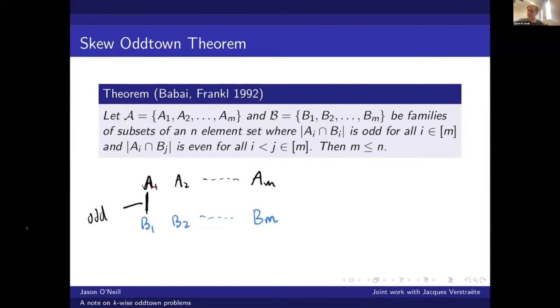But if I take one like this or this, it's even. And to see that this is really a generalization of classical oddtown, if I let my family A equal B, so what I mean by this is AI equals BI for all I, we get that the resulting family satisfies oddtown rules. So this is a generalization of this classical oddtown result. And so the result you get at the end is you can't have more than the ground set.